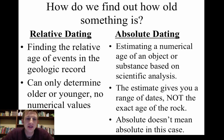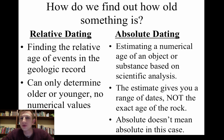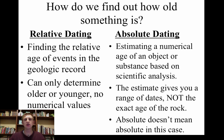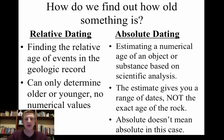Relative dating is just finding the relative age, so you can only determine older or younger. And when we look at rocks, you can have these different rules that we're going to take a look at and see which rocks are older and which ones are younger in comparison to one another. So you can't actually find a number for relative dating.